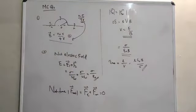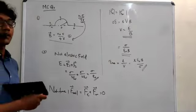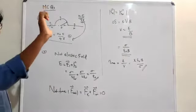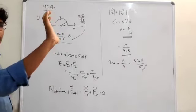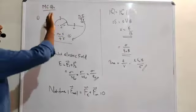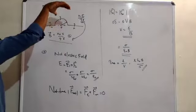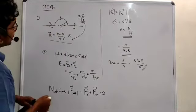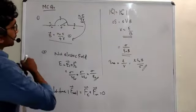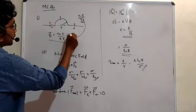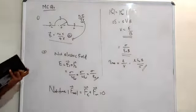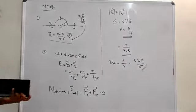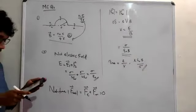We also need to find the direction. Using the right-hand palm rule for the current loop, the magnetic field at the center is directed into the paper. So the answer is μ₀I/4R, directed into the page. That is the answer to question one. Now let's move on to question number two.